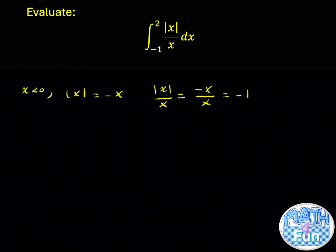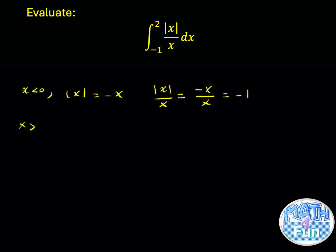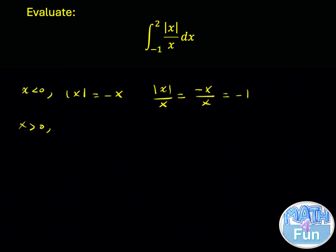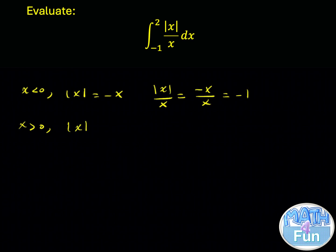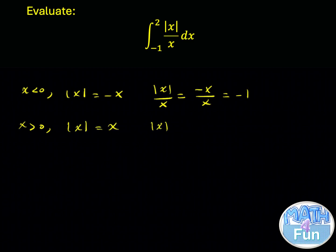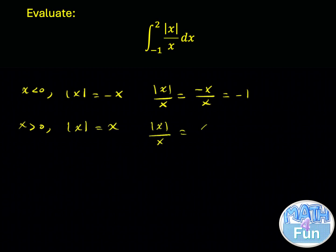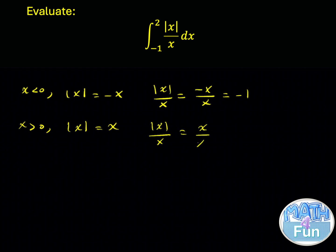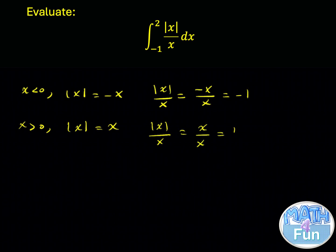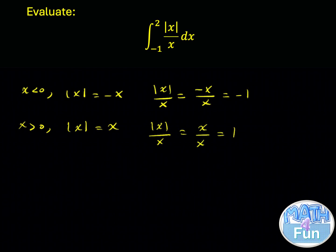For the part where x is greater than 0, absolute x is going to be equal to x, which means absolute x over x equals x over x, which is equal to 1.